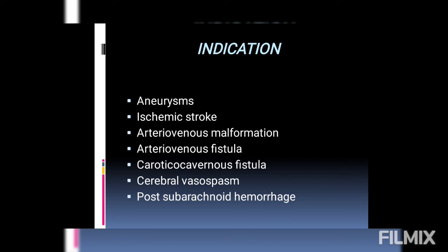Then we have arteriovenous fistula. In AVM, many veins and arteries communicate with each other. But in a fistula, there is one artery that communicates directly with a vein without capillaries. For example, the external carotid artery can directly communicate with the cavernous sinuses in the brain.